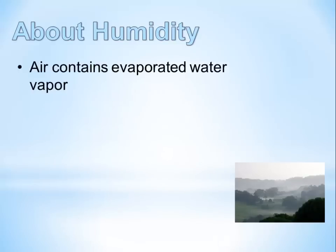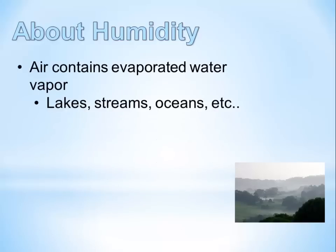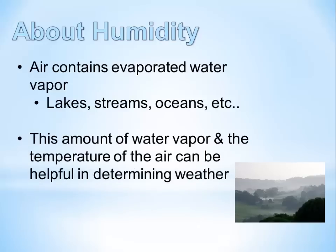A couple things about humidity. We know from our last chapter on phase changes that air contains evaporated water vapor — water coming from sources like lakes, streams, and oceans. Evaporation occurs at temperatures below the boiling point, anywhere between the freezing point of water (zero degrees Celsius) and the boiling point (100 degrees Celsius). This water vapor, along with air temperature, can be very helpful in determining the type of weather we have.